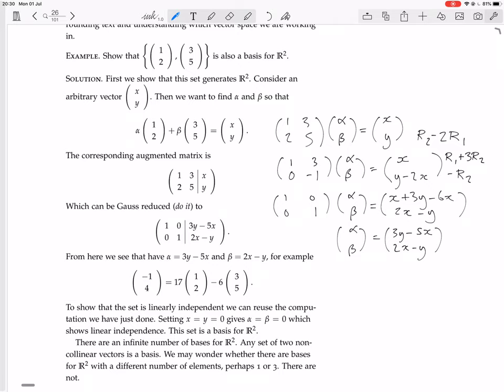We have that alpha equals 3y minus 5x and beta equals 2x minus y. So what we're saying is that if you have these two vectors (1,2) and (3,5), and someone gives you a vector (x,y), and you want to express (x,y) as a linear combination of these two vectors, then you just need to choose alpha equal to 3y minus 5x and beta equal to 2x minus y.